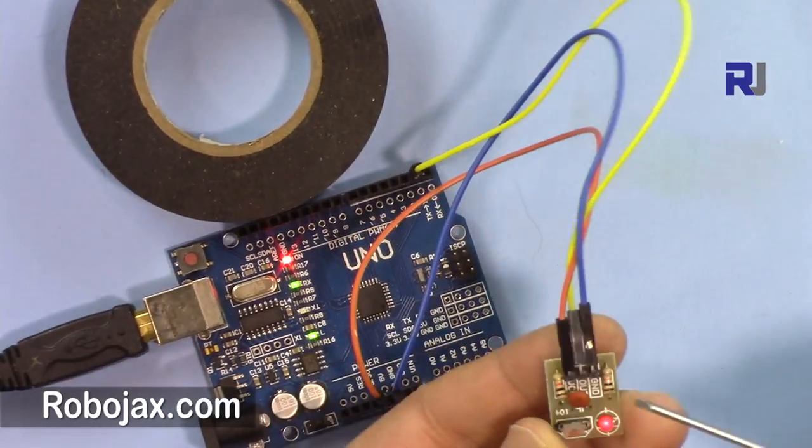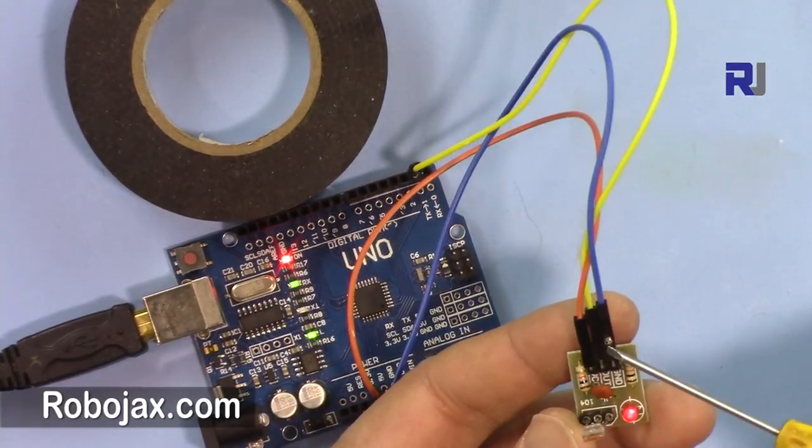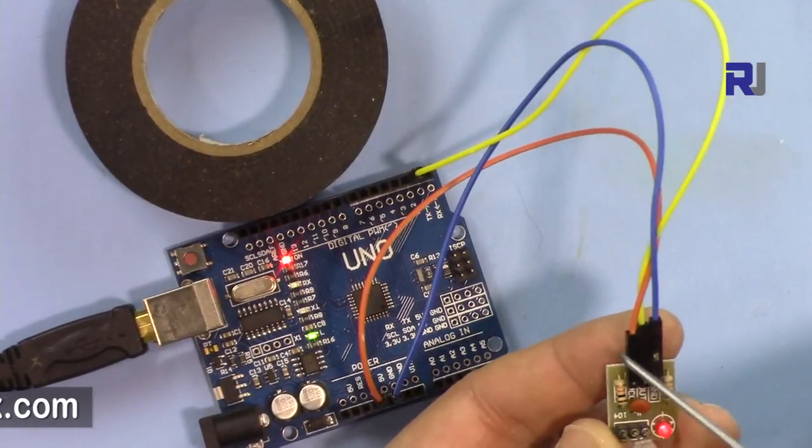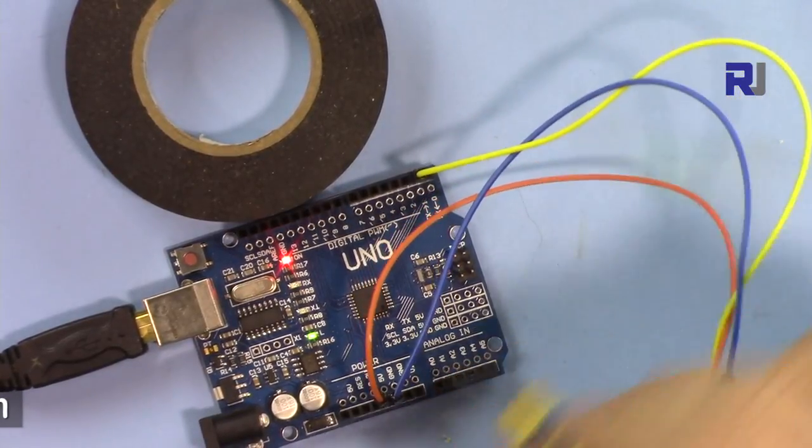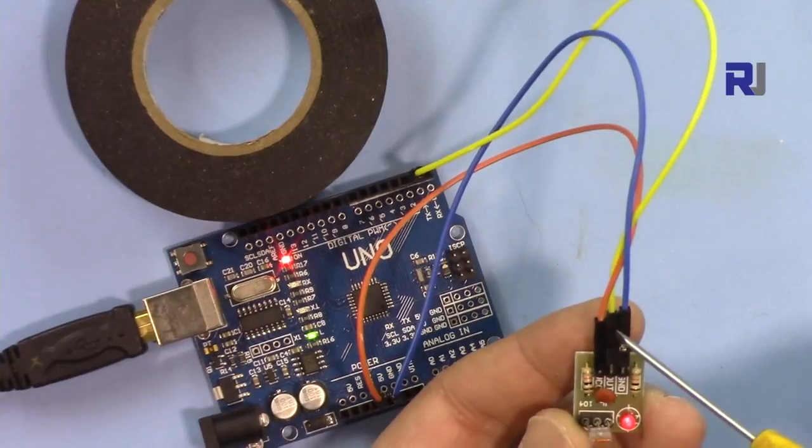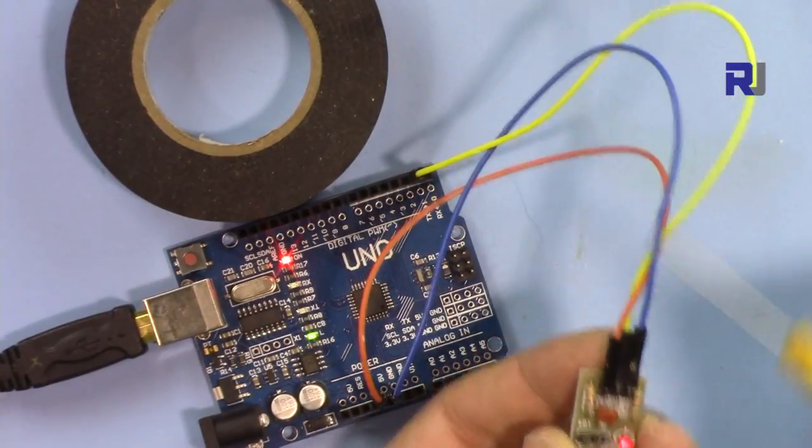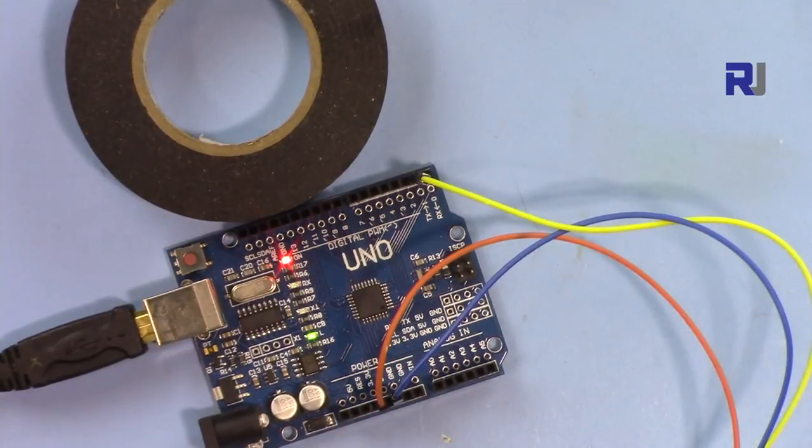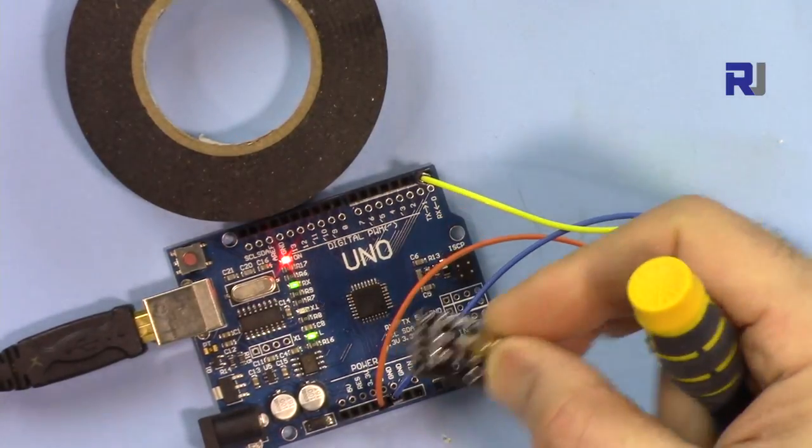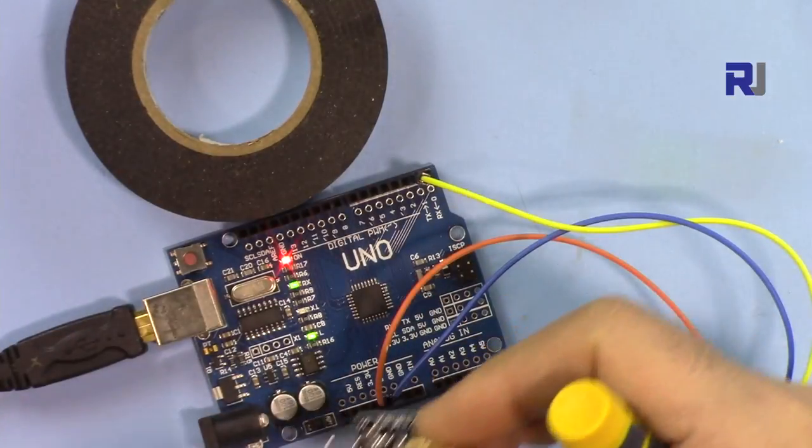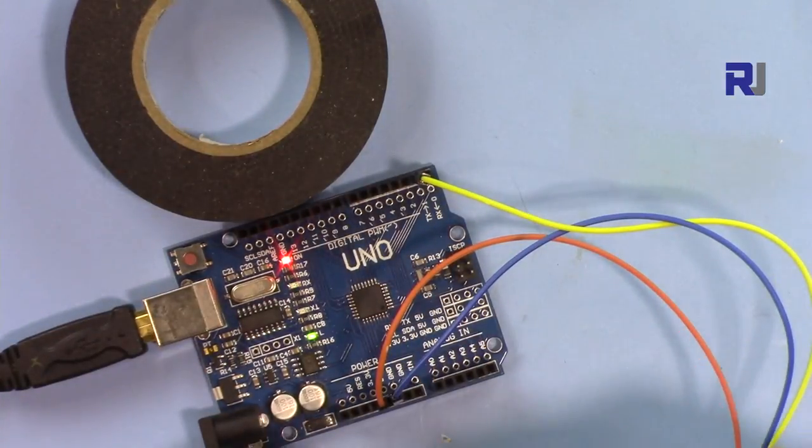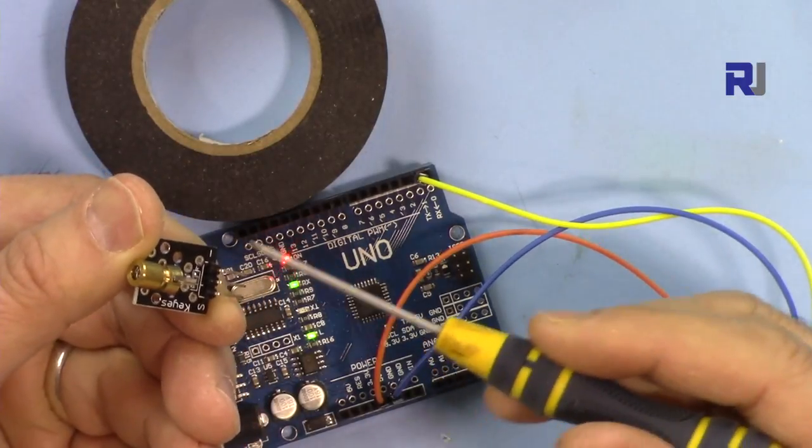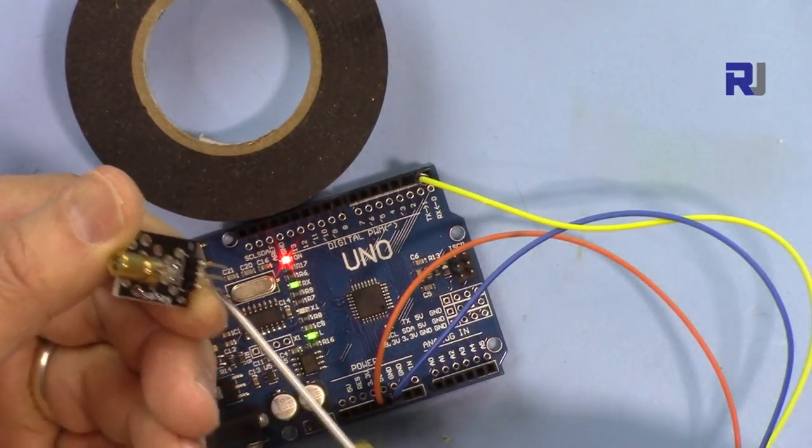The module here, this goes to ground through the blue wire, so this is connected here. The last pin is 5 volts, it goes to the 5 volts, and the middle pin is the out or the signal which is connected to pin two. The transmitter is connected separately to 5 volts, or you can connect it.